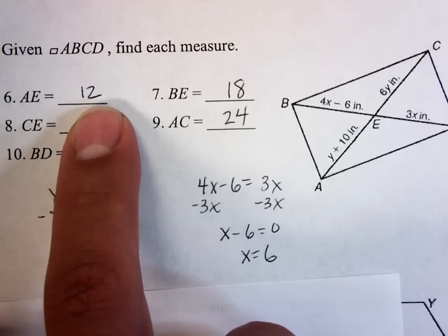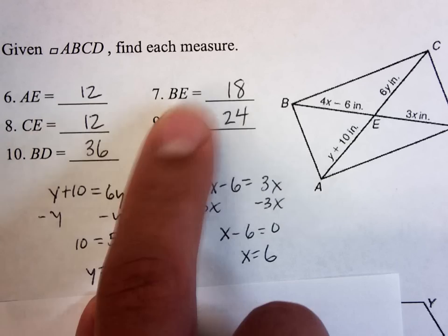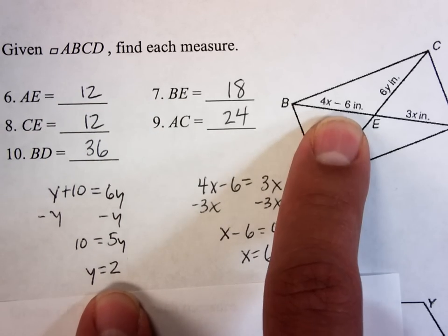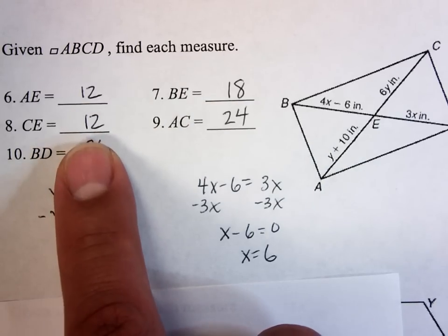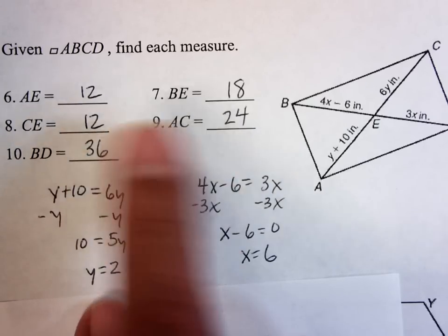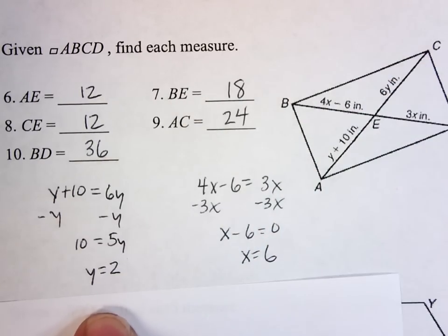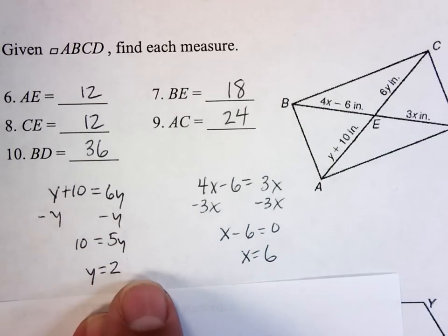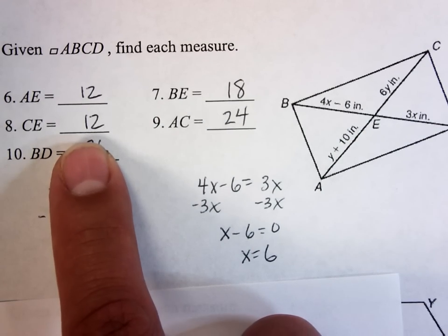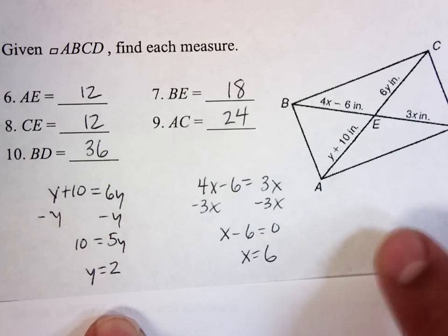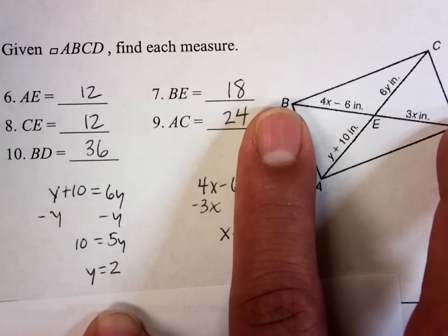But then it's just a matter of plugging in. So AE is Y plus 10. But I just figured out that Y was equal to 2, so AE must be 12. BE is 4X minus 6. But I just figured out that X was 6, so BE must be 18. CE, now it should be 12. We should know these are the same. This is a good way to check. If I put 2 in for Y over here, do I get 12? Yes, I do. These are the same. Now I know that I'm right. It's possible that I messed up my algebra somewhere over here. And a good way to check is once you figure out what Y is, these should both be the same, and they are both equal to 12, so now I know that I am right. AC is 24 all the way through. If that's 12 and that's 12, AC must be 24. And BD all the way through over here, it's 36.